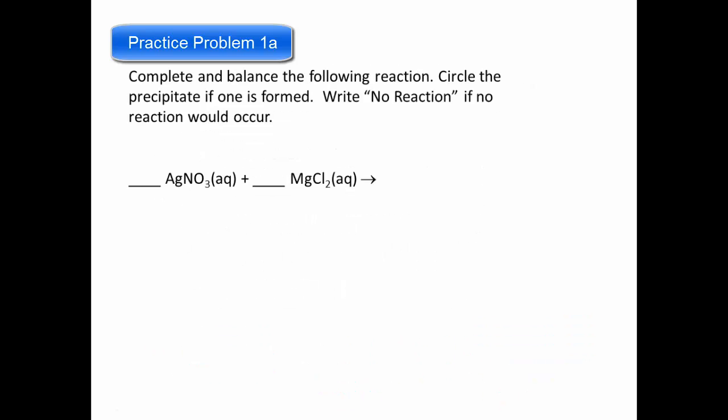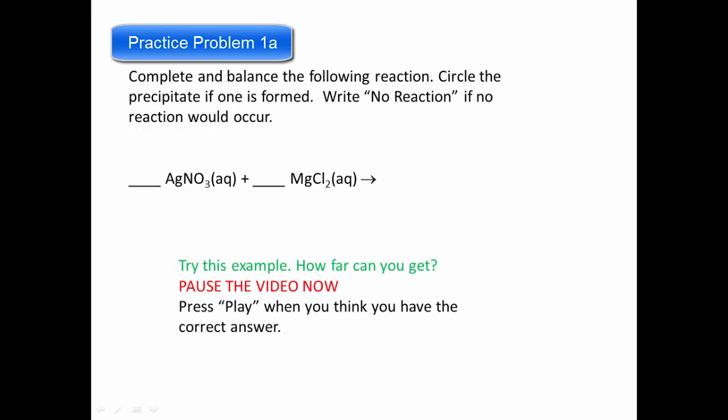So now what I want you to do is we're going to do a few examples together, and I have lots of examples to make sure that you understand this process. So for this reaction, I want you to complete and balance the reaction. If you find that there are no products that are solid, if both products are aqueous, you write no reaction underneath the reaction. So why don't you try this one out? Pause the video now and see how far you can get. Press play when you think you have the correct answer.